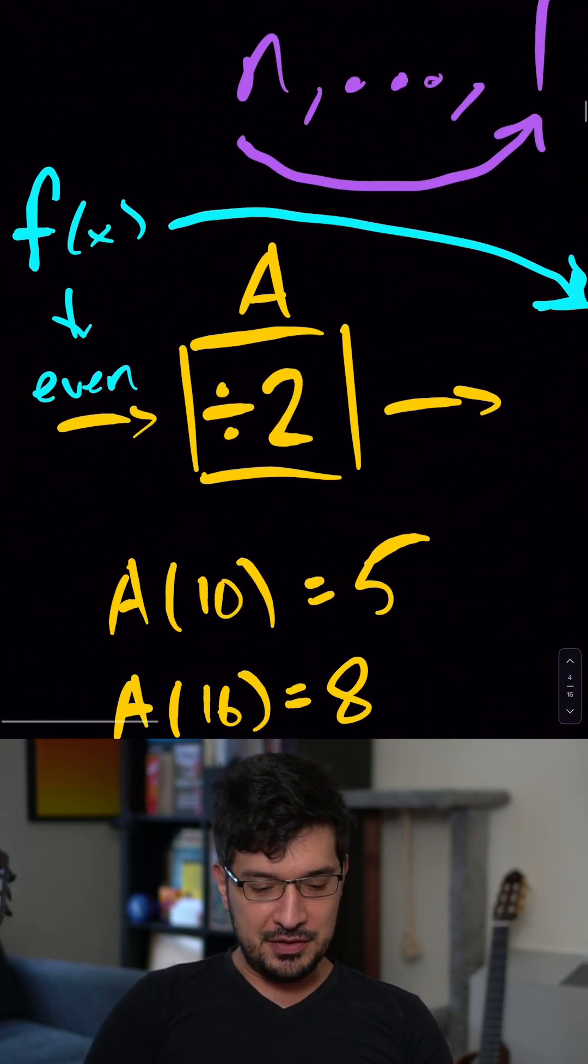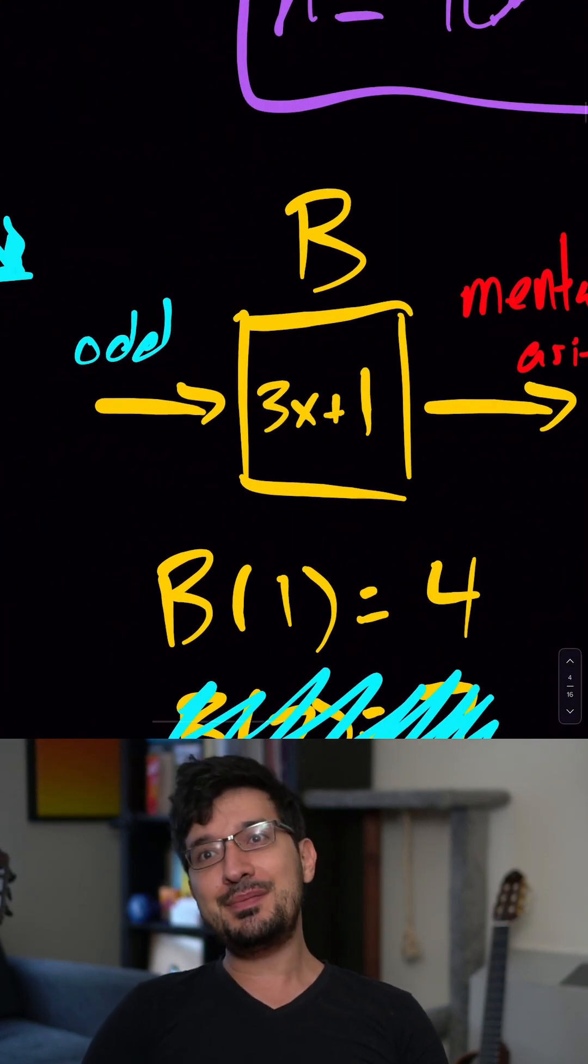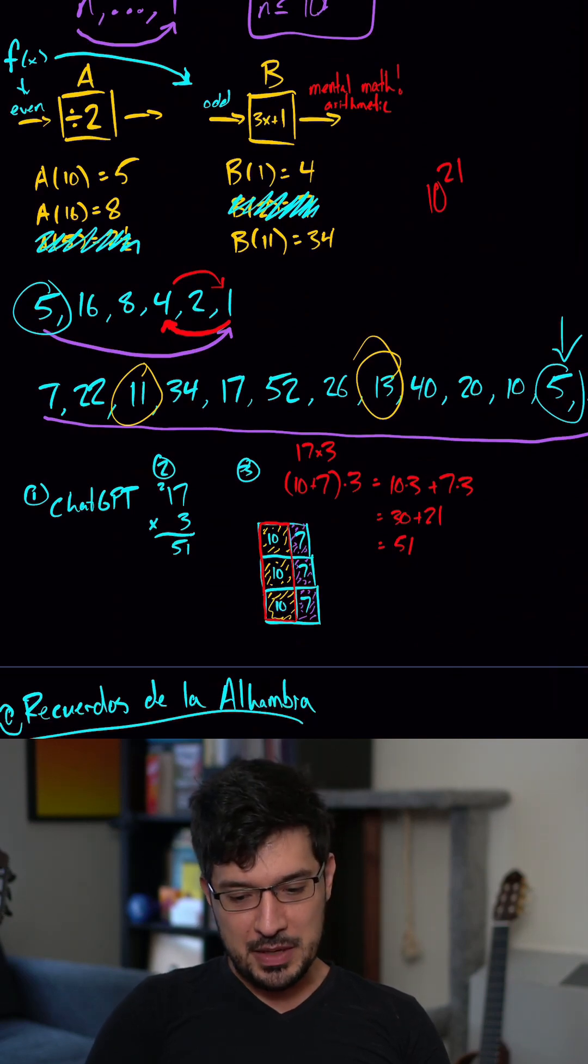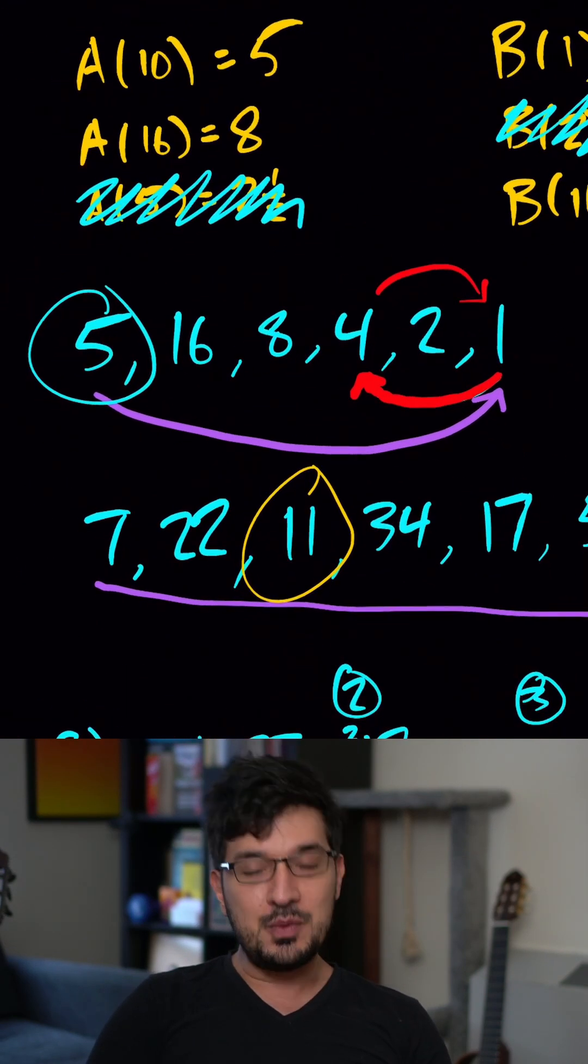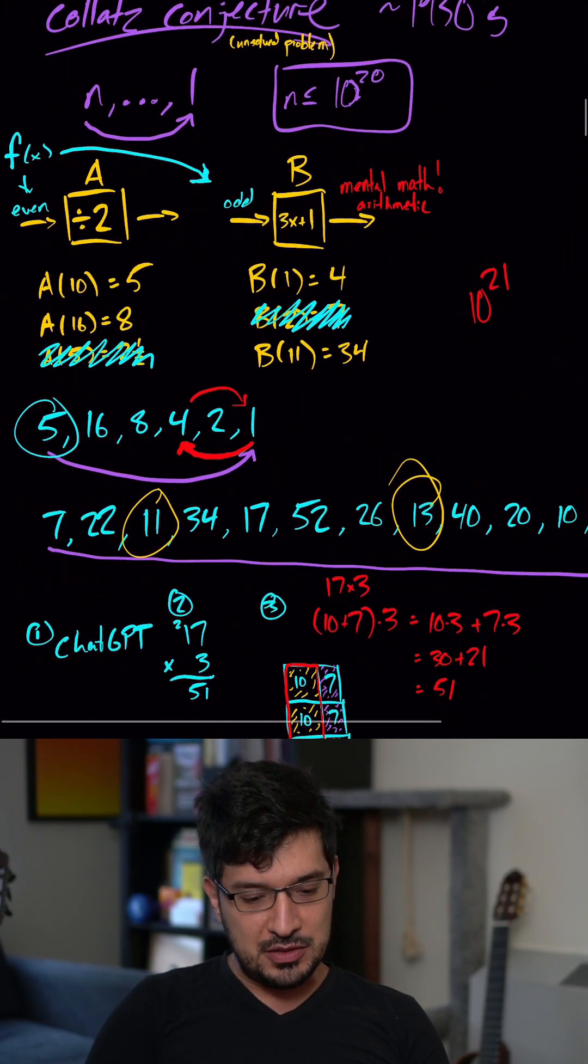Basically, you either divide numbers by two if they're even, or you triple plus one a number if it's odd. And no matter what number you start with, we think, but we don't know for sure, that it always ends up going to one.